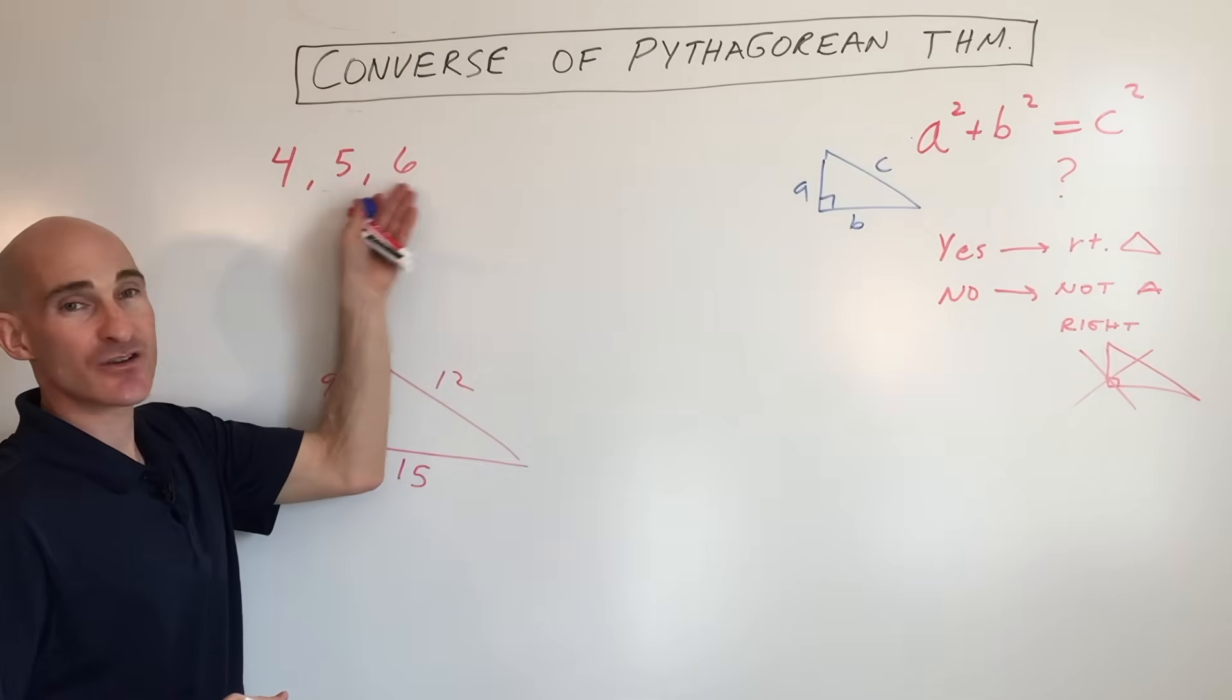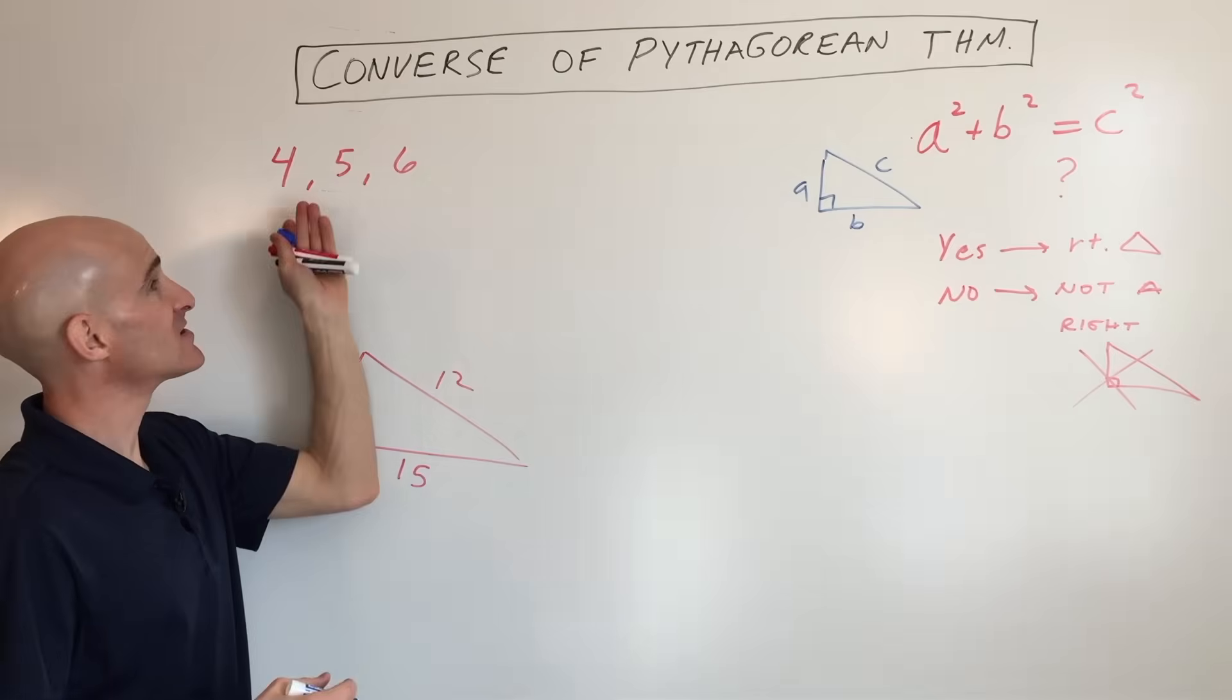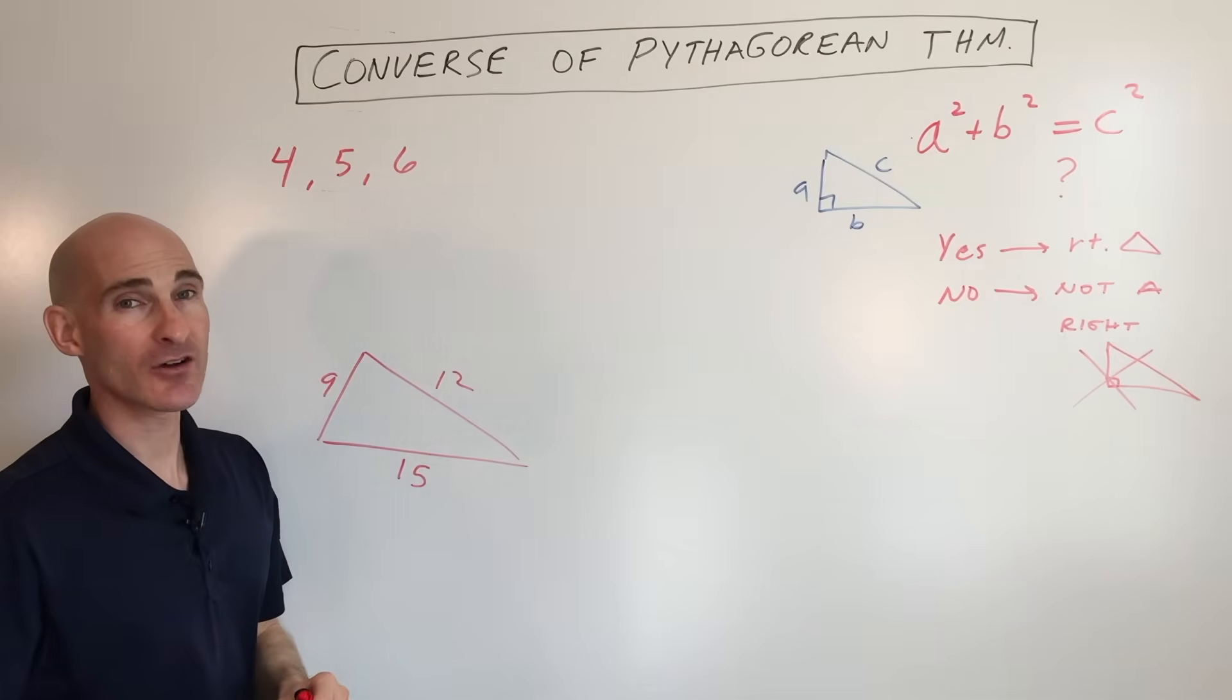So let's take a look. Say they give us the three sides here, 4, 5, 6. They say, does this form a right triangle?